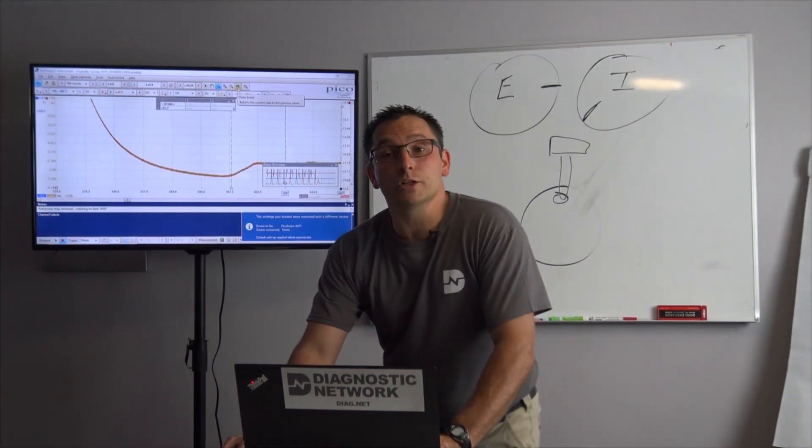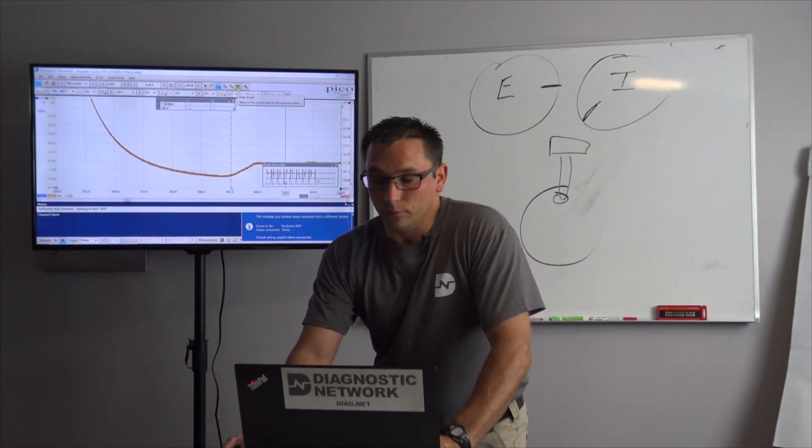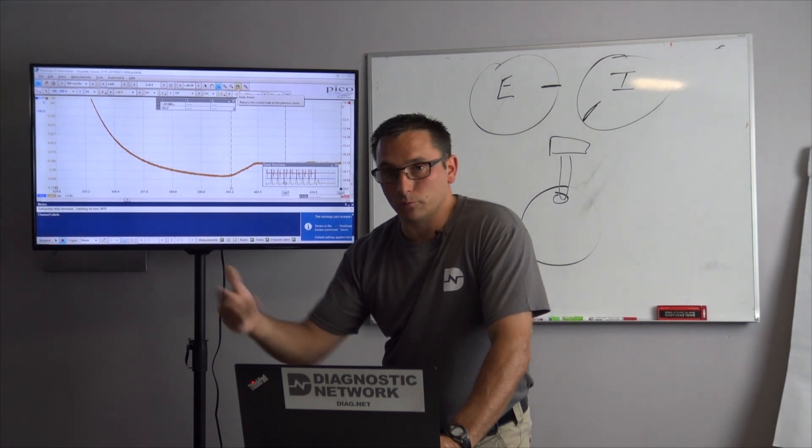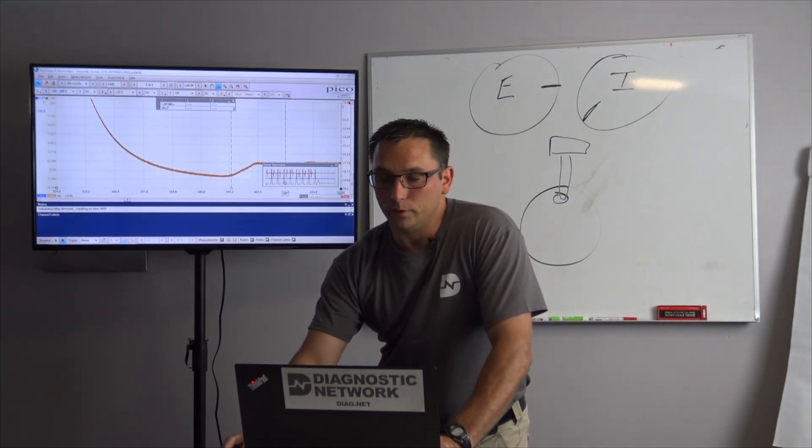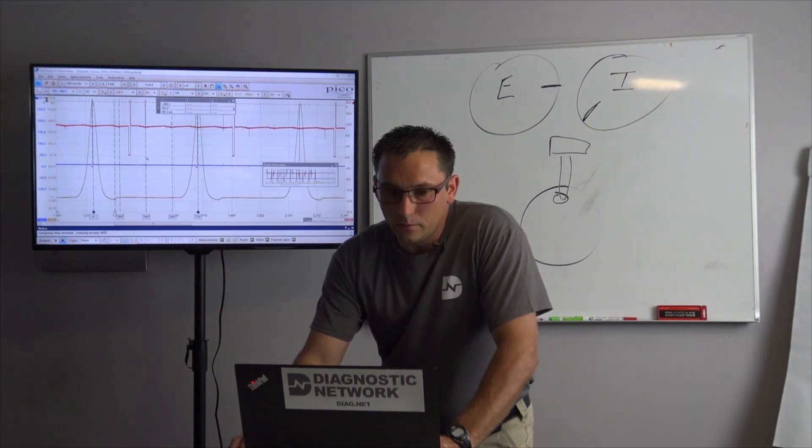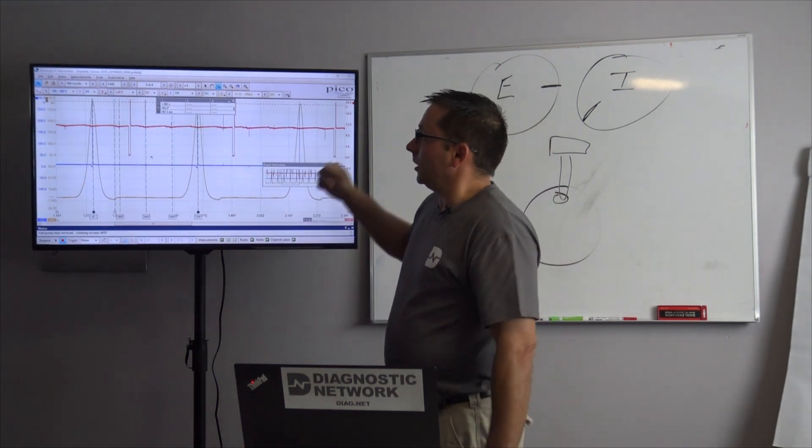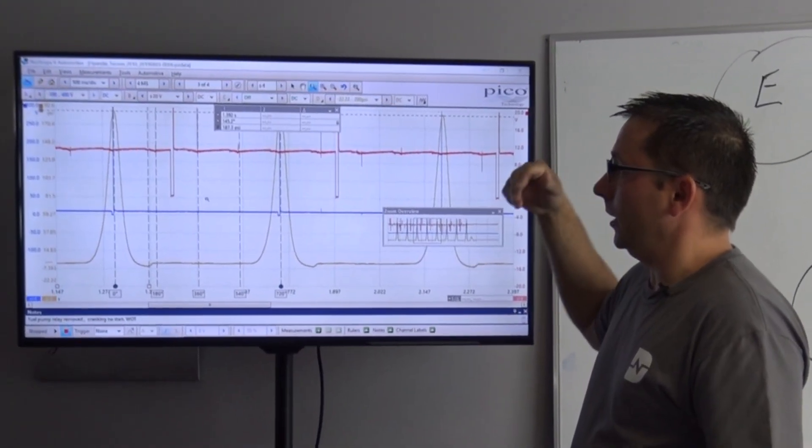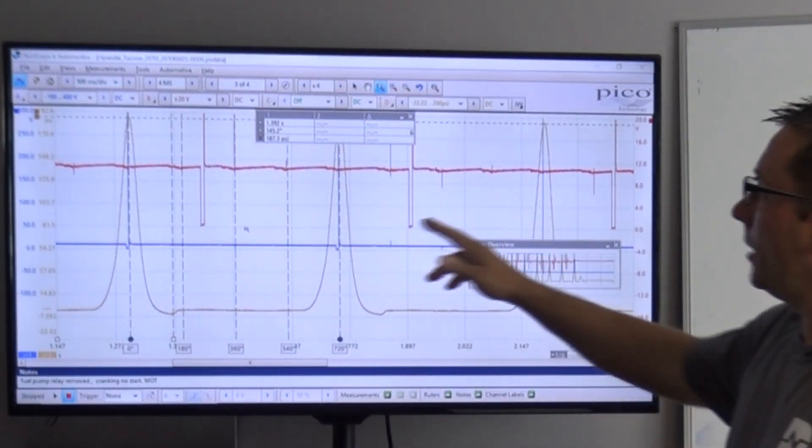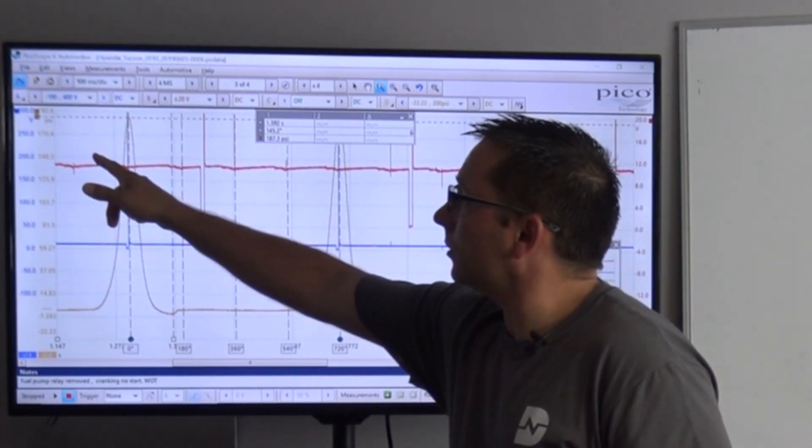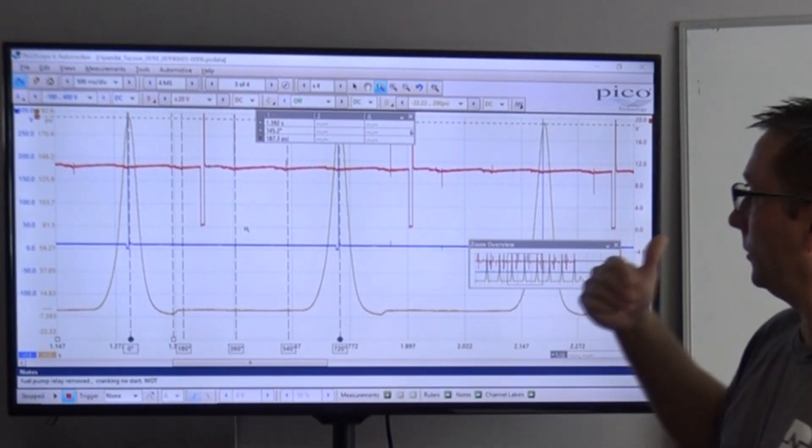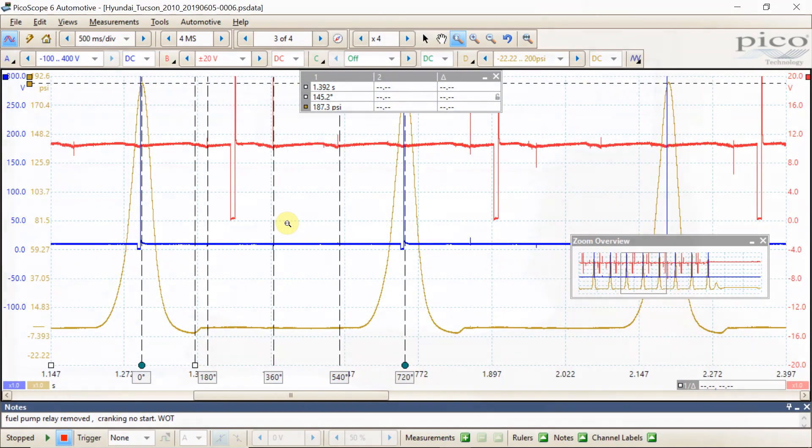I also did a cranking compression test with the fuel disabled. So I pulled the fuel pump relay, I left the injectors plugged in, pulled the fuel pump relay, and also put the in-cylinder pressure transducer so we could see what we have here. So this is cranking here on this vehicle, wide open throttle. And I did let it stabilize here. And what we have here is about 187 PSI. So this thing just cranks at that. And you see, we have a flat line here. There's a flat line from the bottom dead center all the way over to top dead center all the way back down to bottom dead center. We have that flat line.